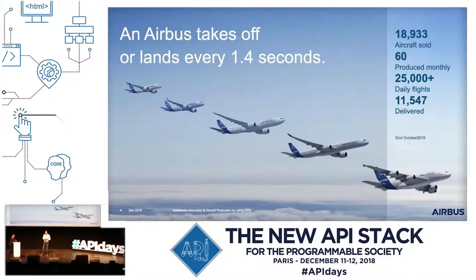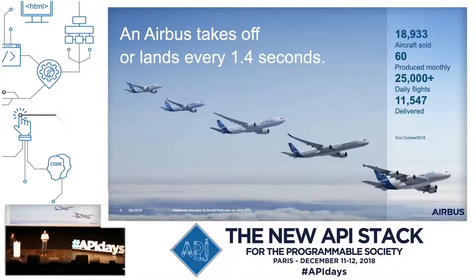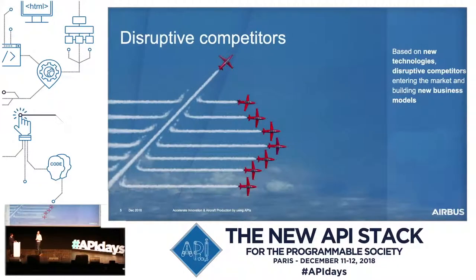We have nine years of production backlog, and some airlines are not able to wait nine years to get their aircraft. So we really have to produce more aircraft, and faster, but we have to keep the same level of quality and security — because it's what made the reputation of Airbus. Today, Airbus is the leader in terms of manufacturer of commercial aircraft, but we are more and more challenged by disruptive competitors who are entering the market and building new business models based on new technologies.